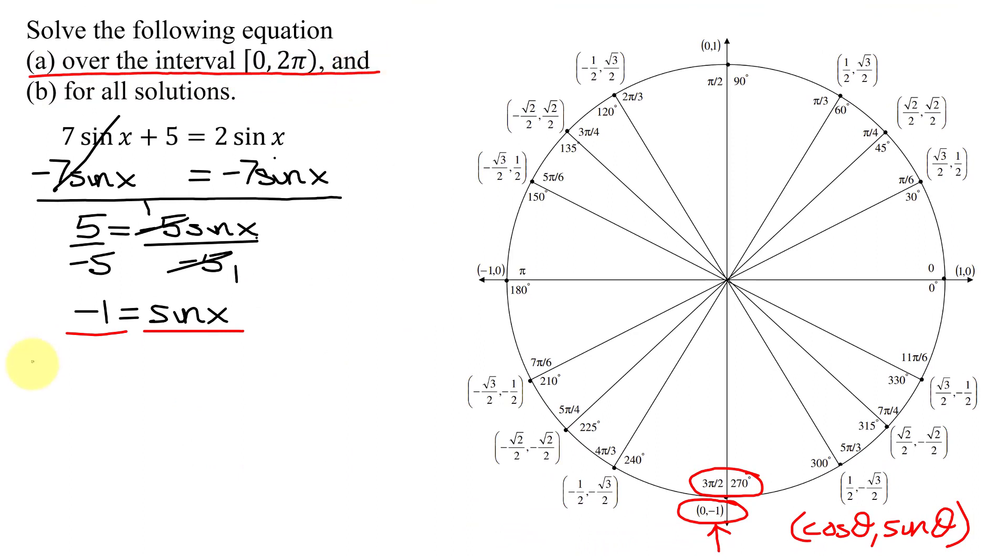So in part A, I need to find solutions over the interval 0 to 2π. Well, there's just one point right here that satisfies these conditions, and that's when x equals 3π over 2 radians.